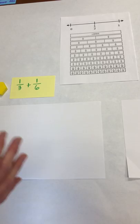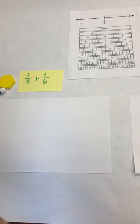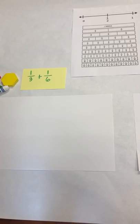So estimating already tells me that this should be around a half. We want them constantly estimating and connecting to benchmark fractions throughout.